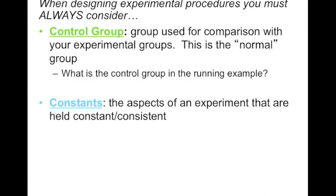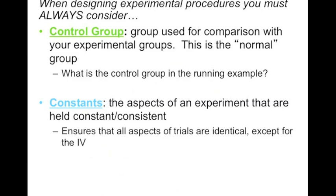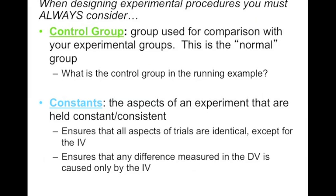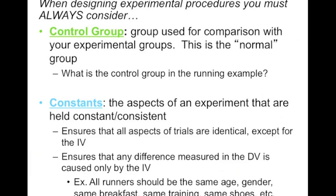Another thing that is so critical are constants, or some people call them controlled variables. These are aspects of an experiment that are held constant or consistent among all groups. This is going to make sure that all aspects of the trials are identical except for my independent variable, which is the only thing that I want to be different. This ensures that if any differences arise, it's due to the fact that the independent variable is causing these effects.